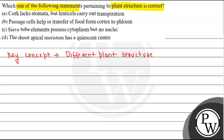Now let's look at plant structure based on our options. The first option talks about cork. Cork is called phellum — cork is another name for phellum.